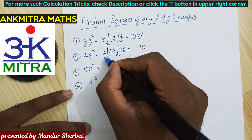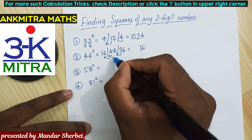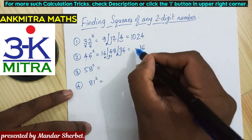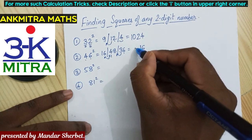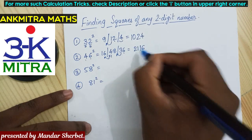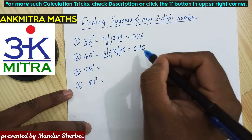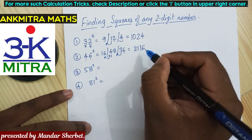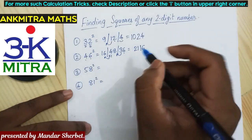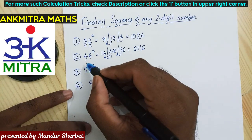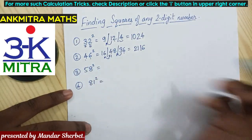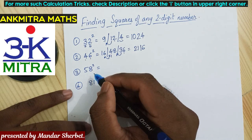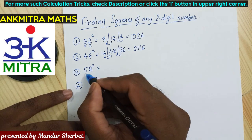16 plus 5 is 21, so we write down 21. The final answer is 2116, which is the square of 46.